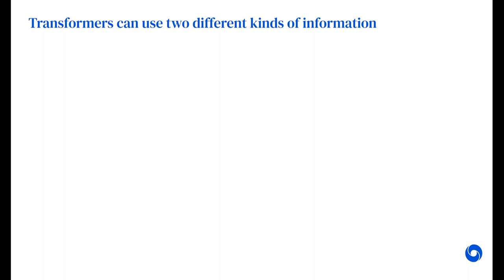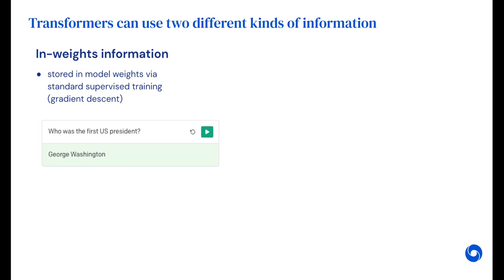Transformers can make use of two fundamentally different kinds of information. In-weights information, which is stored in model weights via standard supervised training, e.g. gradient descent,